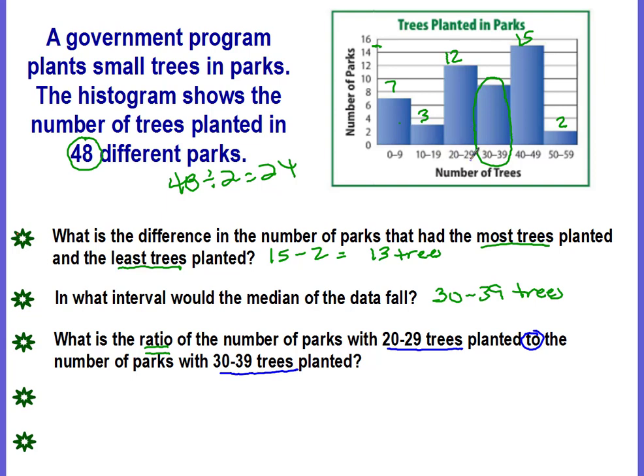So how many 29 trees were planted? 12. There were 12 parks that had 20 to 29 trees planted. And how many parks had 30 to 39? This is going to be 9. So it is a 12 to 9 ratio. And remember, we need to simplify our ratio. We could divide both by 3. And that's going to give us a 4 to 3 ratio. So the ratio would be 4 to 3.